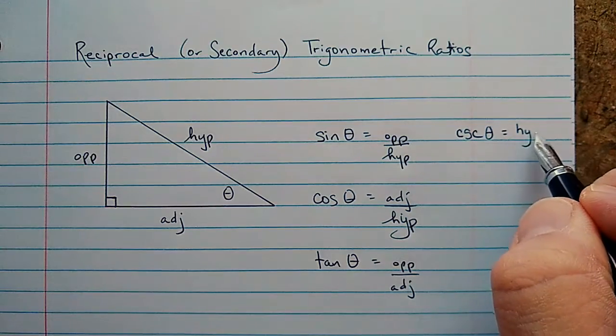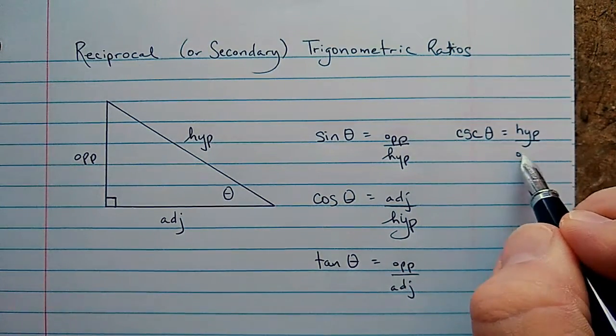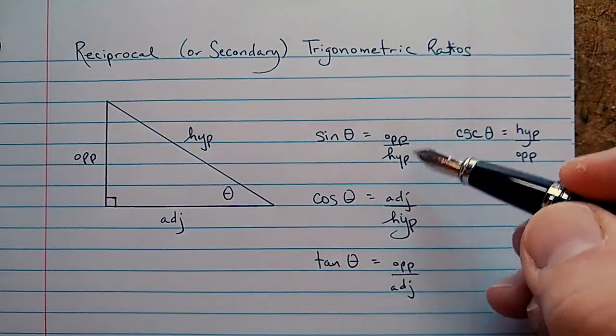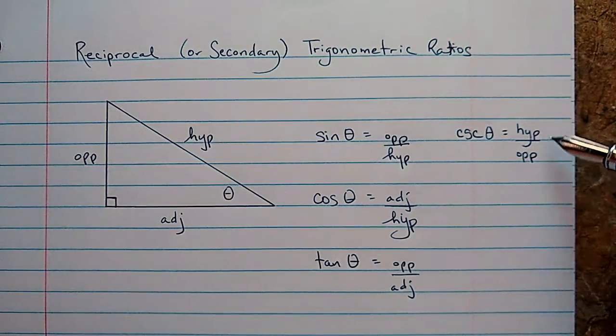So you can see now why these are called reciprocal ratios. This fraction is a reciprocal of this one. It's flipped over. Numerator and denominator are switched.